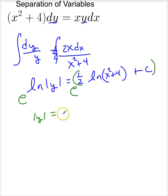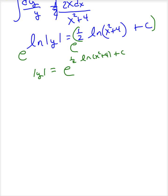Now, this is e to the 1/2 natural log of x squared plus 4 plus c. Now, this didn't simplify nicely, did it? So, let me rewrite this as e to the natural log of the square root of x squared plus 4 plus c.